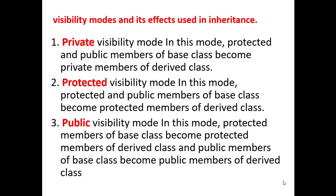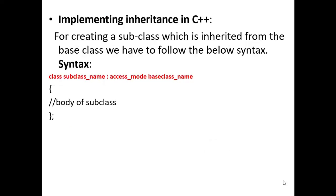Next is how to implement inheritance in C++. The syntax requires the keyword class, then a name for your subclass or derived class, followed by a colon. After that, you specify the access mode — that is the visibility mode — which can be private, protected, or public. Then you mention the name of the base class or parent class from which you are inheriting. Once the declaration is done, you write the body of the derived class, and close it in the normal way.